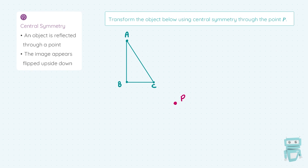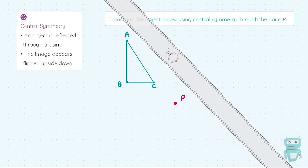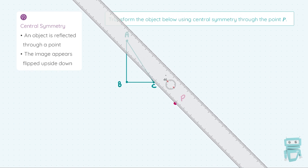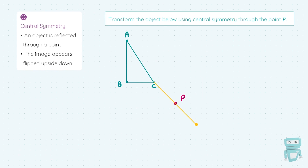Let me show you how it's done. What we're going to do is grab our ruler, and all we're going to do is take each point and reflect it through the point P. I'm going to start with the point C, and I'm going to match up my ruler with point C and the point P. I'll measure from point C — it is 3 centimetres to point P — and now I'm going to keep my ruler in that exact position and come out 3 centimetres to the other side: 1, 2, 3. That point, 3 centimetres to the other side of P, is the transformed point under central symmetry, and I'm going to call it C prime. So we've taken C, put it through P, and came out the same distance the other side.